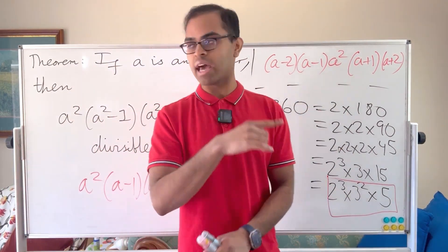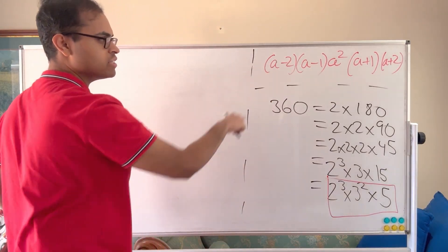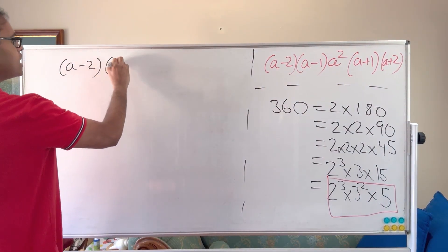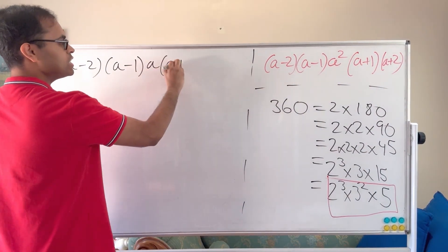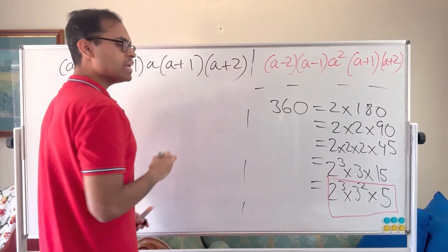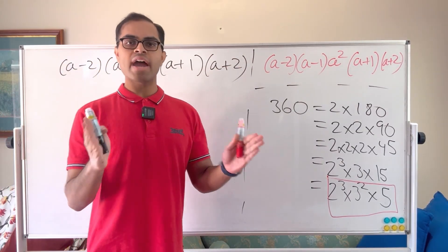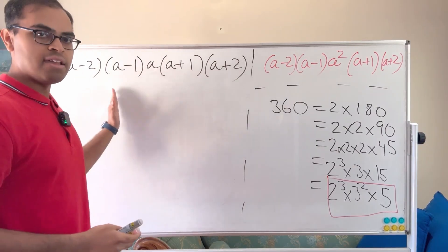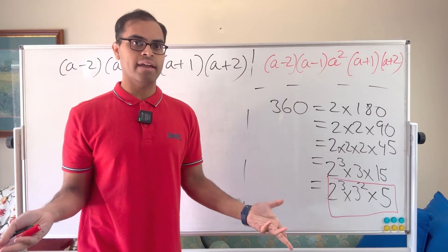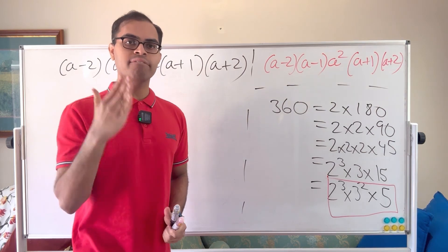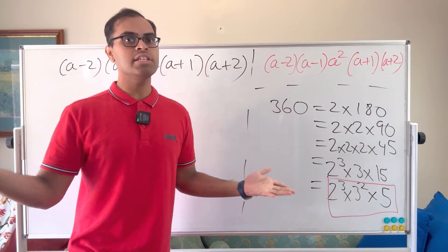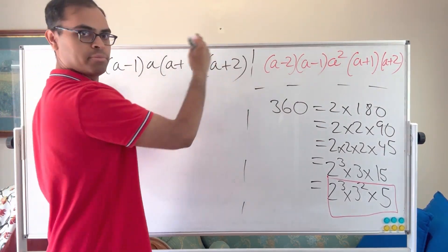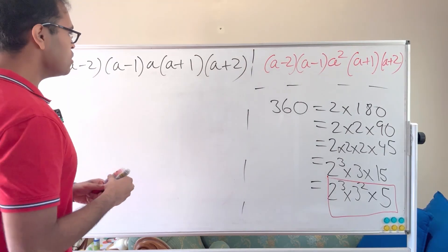It's almost a product of five consecutive integers, but the middle integer is squared. So let's look at the product of five consecutive integers: a minus 2 times a minus 1 times a times a plus 1 times a plus 2. First, 5 has to go into this product — because every five integers, there's always going to be a multiple of 5. Multiples of 5 appear at 5, 10, 15, 20, and so on, every five integers. So if you take a product of five consecutive integers, one of them has to be divisible by 5. So we know that 5 goes into this product.